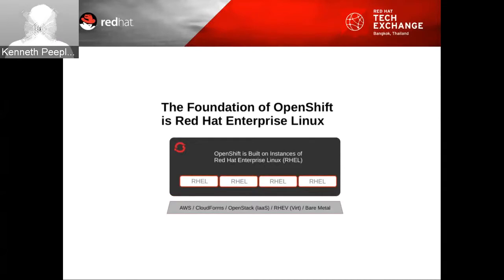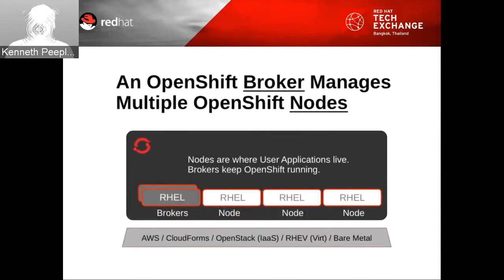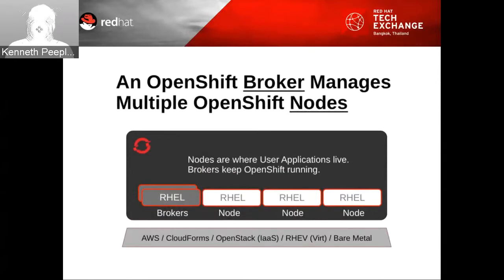An OpenShift broker manages multiple OpenShift nodes. The nodes are where user applications live; brokers keep OpenShift running. The two main functional units are the broker and the node, and communication between them is done through a message queuing service. The broker is the single point of contact for application management activities — responsible for managing user logins, DNS, application state, etc. Customers don't contact the broker directly; instead they use the web console, CLI tools, or the IDE. Node servers host the built-in cartridges and the gears where user applications are stored and served.